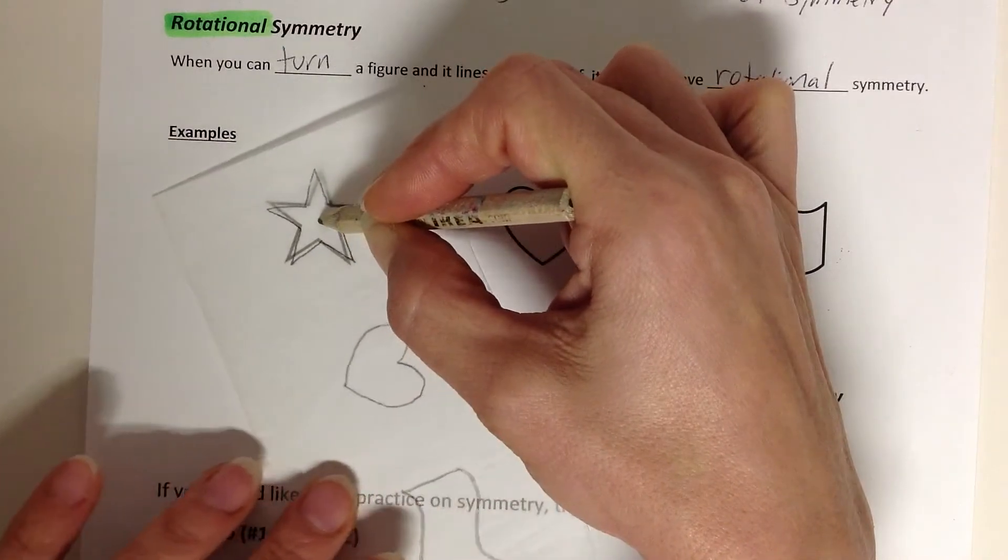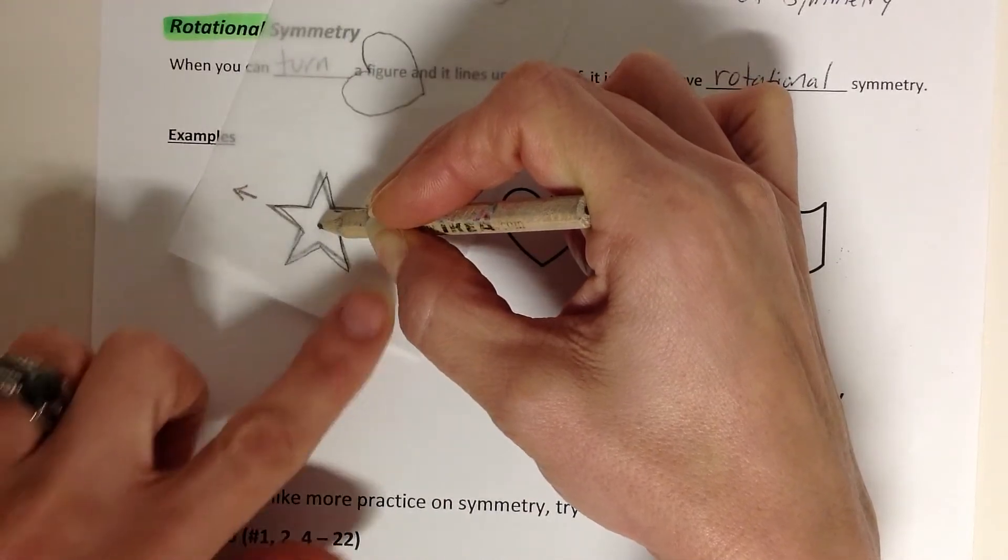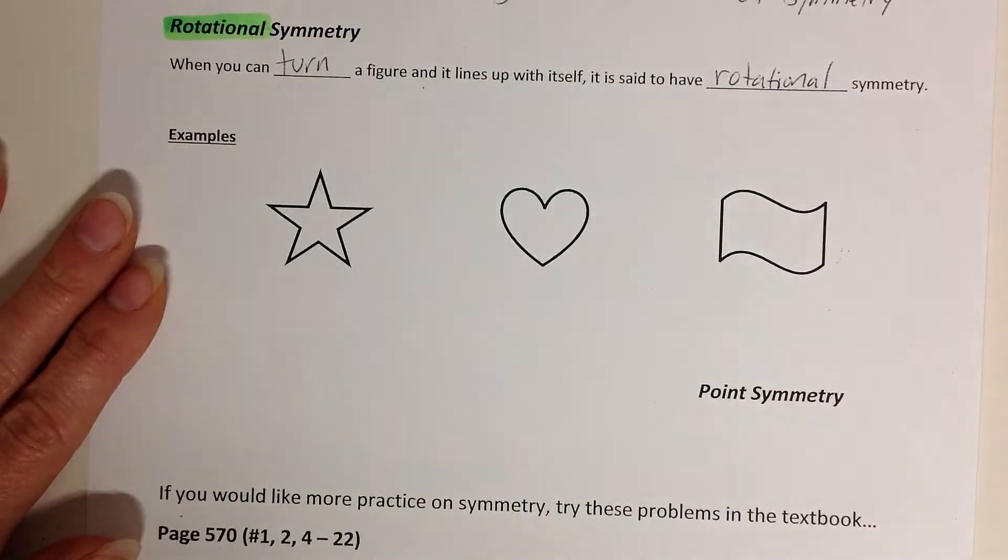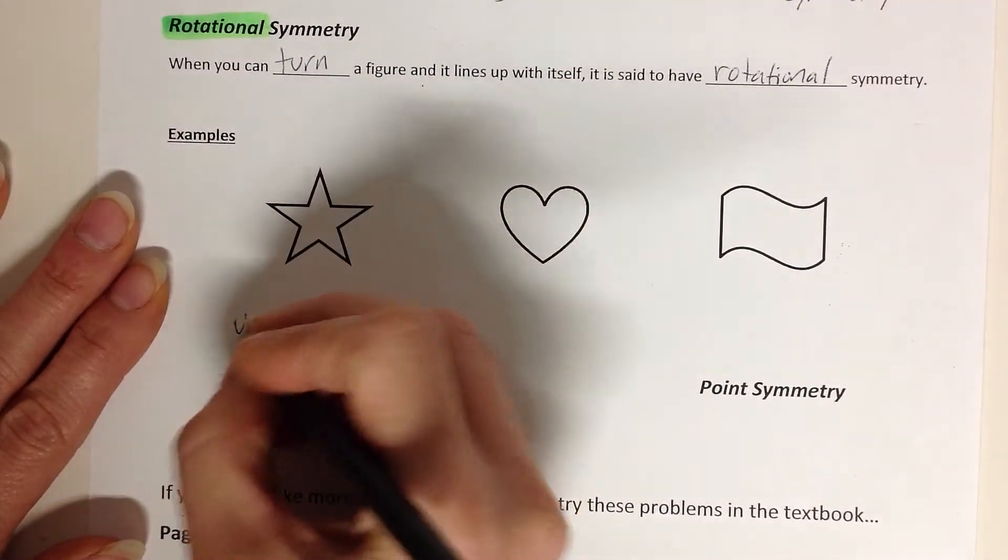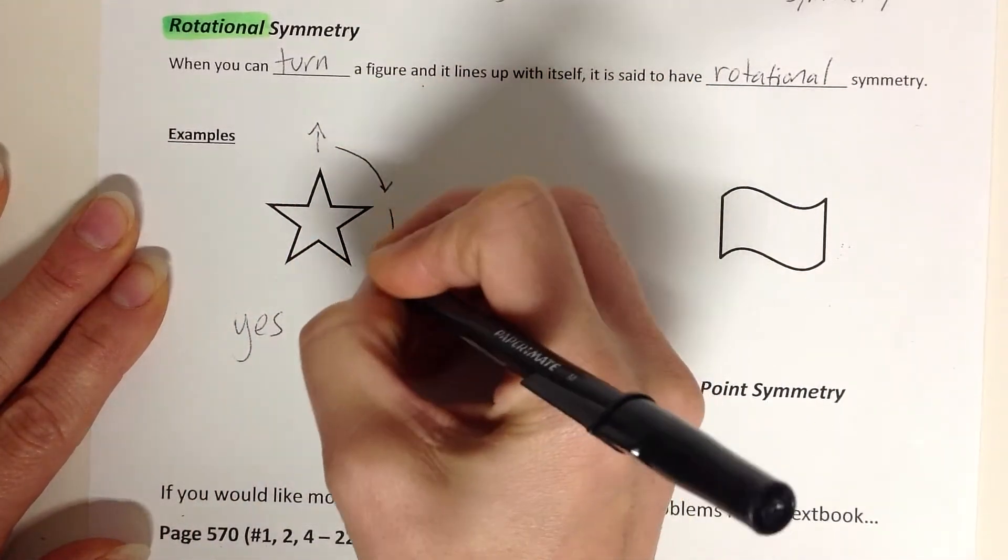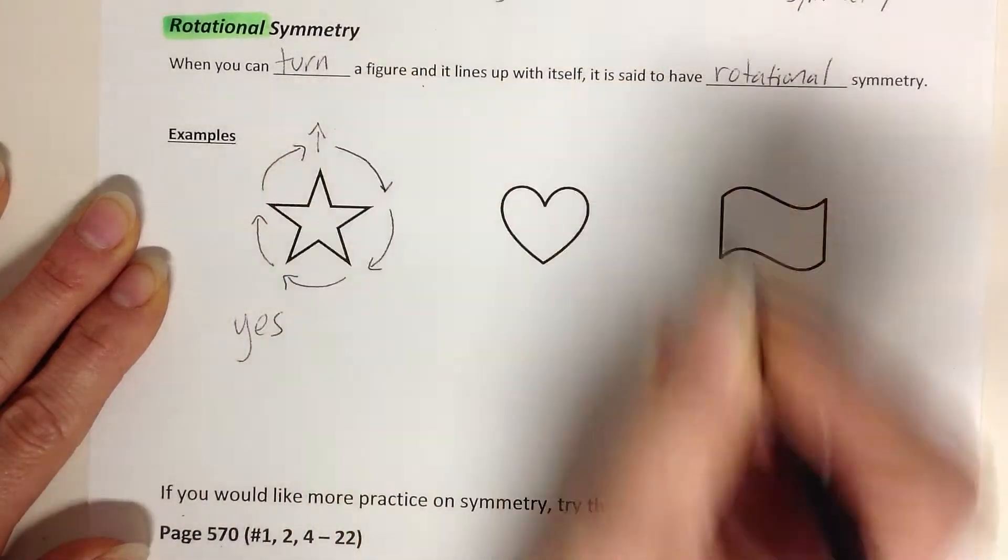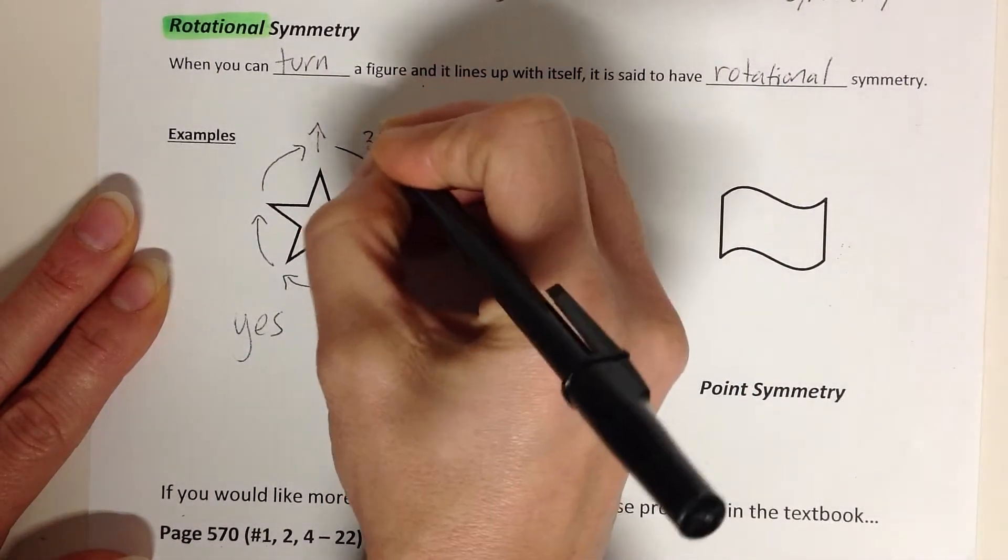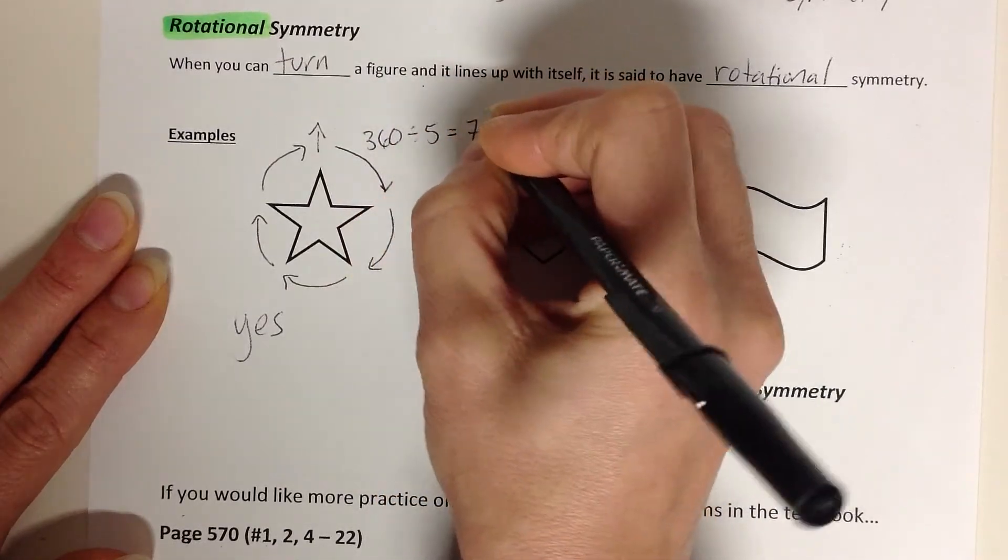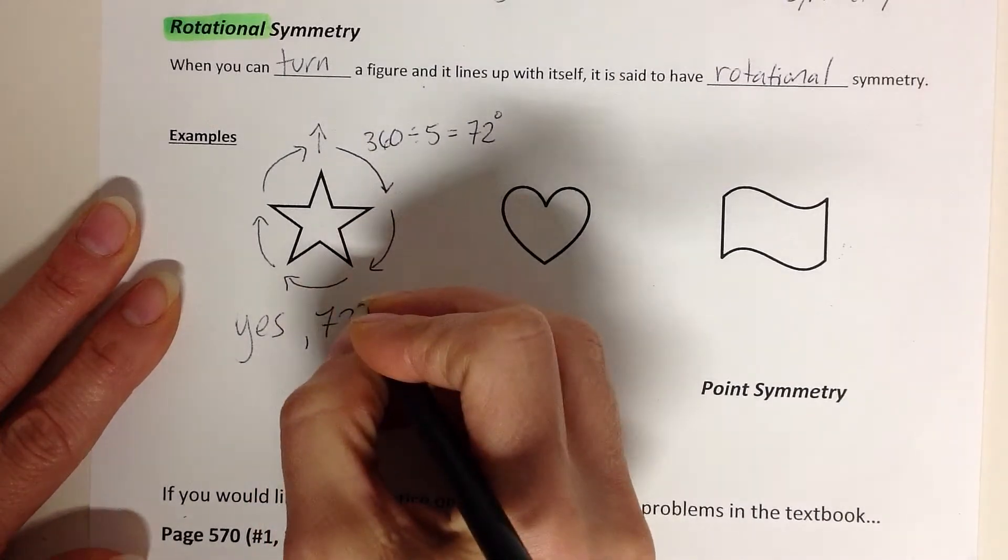How many times can I rotate this and it lands on itself to get all the way 360 degrees around? Okay, so one, two, three, four, and five, and I'm back to the top. Okay, so again, this is going to be a yes. This has rotational symmetry. And I turned it one, two, three, four, five times to get back to the top. That's 360 degrees. So if I divide that by five equal turns, it's going to be 72 degrees of rotation. So every 72 degrees, this lands on itself.